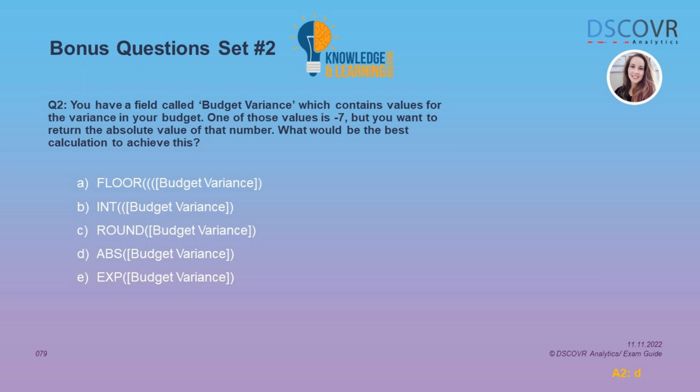For question number 2, let's say you have a field called Budget Variance, which contains values for the variance in your budget. One of those values is negative 7, but you want to return the absolute value of that number. We're looking for the function that returns the absolute value of any given number, and the correct answer here is D.